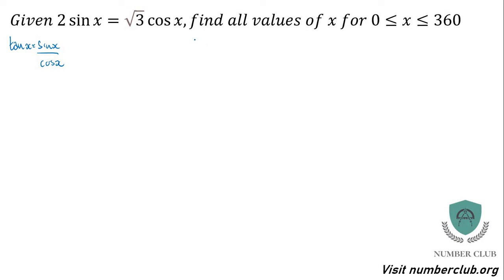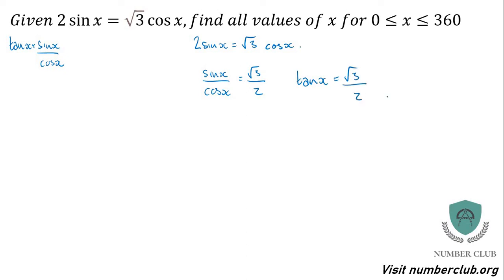Where we have 2 sine x equals root 3 lots of cos x, I'm going to divide by cos x and divide by 2. I'll end up with sine of x over cos of x equals root 3 over 2, which means tan of x equals root 3 over 2. Don't panic if you get something that's top-heavy here — with tan it's absolutely fine.